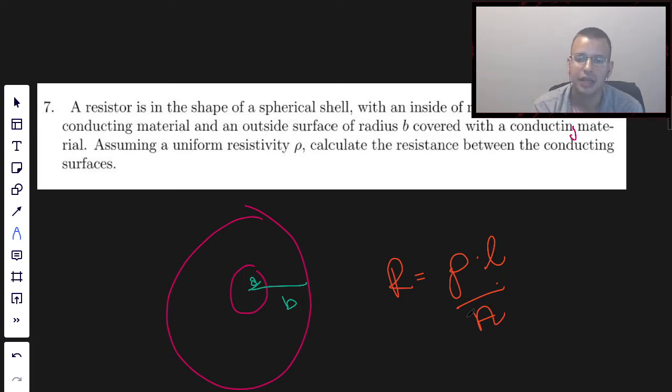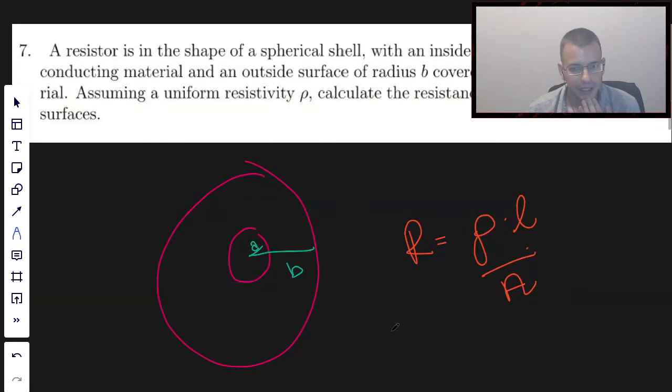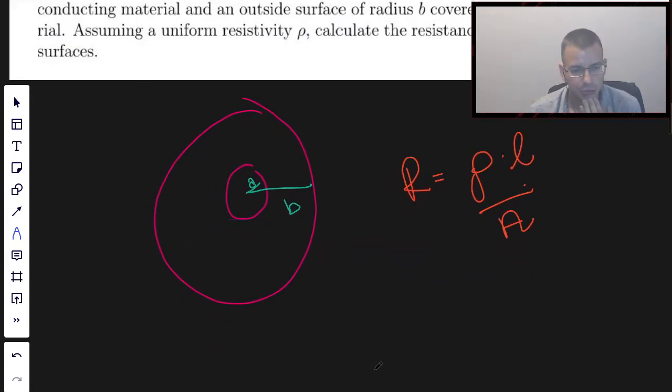And then if you have a very thick wire, it's going to offer more parallel paths, basically. So you're going to lower your resistance, which is why you divide by A. So for this, what we're going to do is start from the middle and basically integrate our way out.